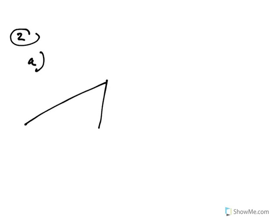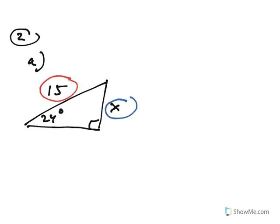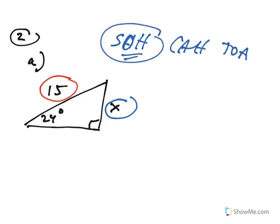Question 2a: you were given a right triangle with a 24-degree angle and a hypotenuse of 15. In right triangle questions, we look at what we're given — the hypotenuse — and what they're asking for — the opposite side. SOHCAHTOA tells us to use sine, so sine 24 equals x over 15. I'll look up sine 24 on the trig chart.